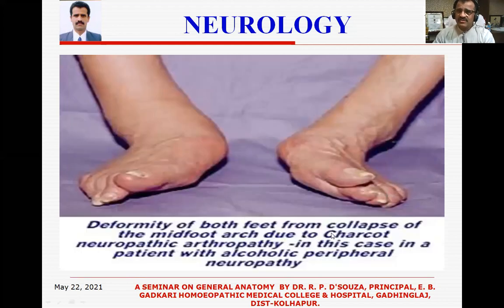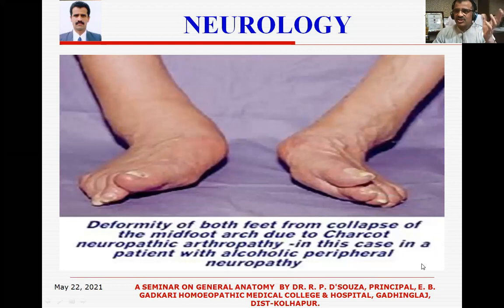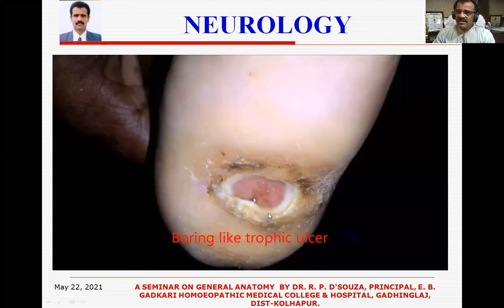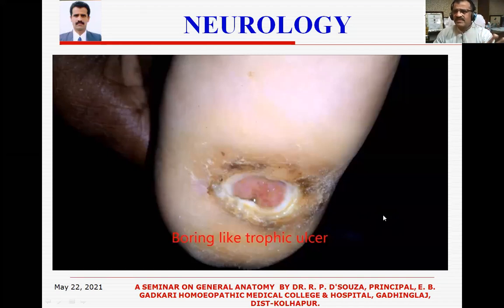We will go for some pictures. This is a deformity of both feet due to collapse of the midfoot due to Charcot neuropathic arthropathy. Here you can see a trophic ulcer on the heel — on the sole — which has been there for a long time, boring like a trophic ulcer. It doesn't heal easily and lasts on the body for a long time; sometimes it stays with the patient until they die.